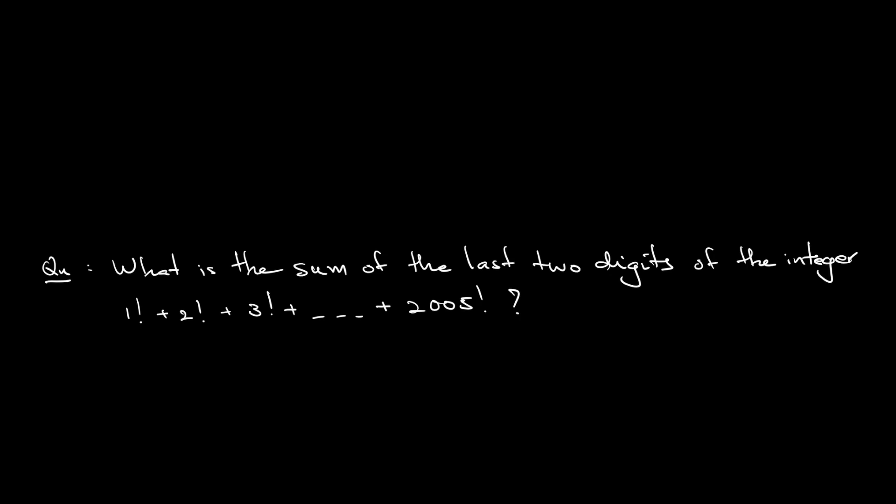The question asks us to find the sum of the last two digits of the integer 1 factorial plus 2 factorial plus 3 factorial all the way until 2005 factorial.